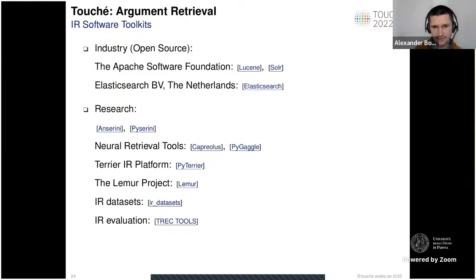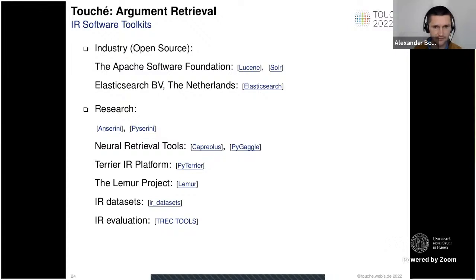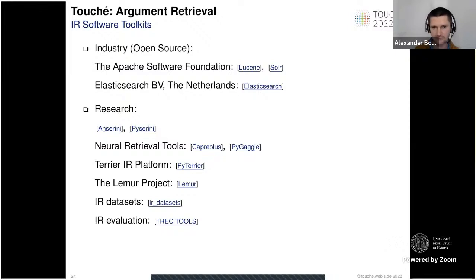IR Datasets provides a large collection of information retrieval datasets where you can also find relevance judgments for documents from different collections — useful for parameter optimization or training your retrieval approaches. There is also the trec_eval tools library, a nice Python library that allows easy evaluation using different standard metrics for retrieval evaluation.